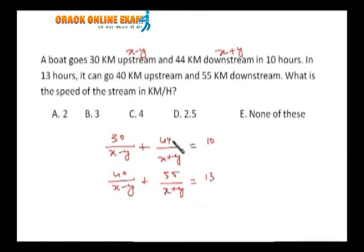See, 44 and 55 - x plus y is a factor of both 44 and 55, so instantly you can say x plus y must be 11. Similarly, x minus y is a factor of 30 and 40 both. It may be 5, may be 10.